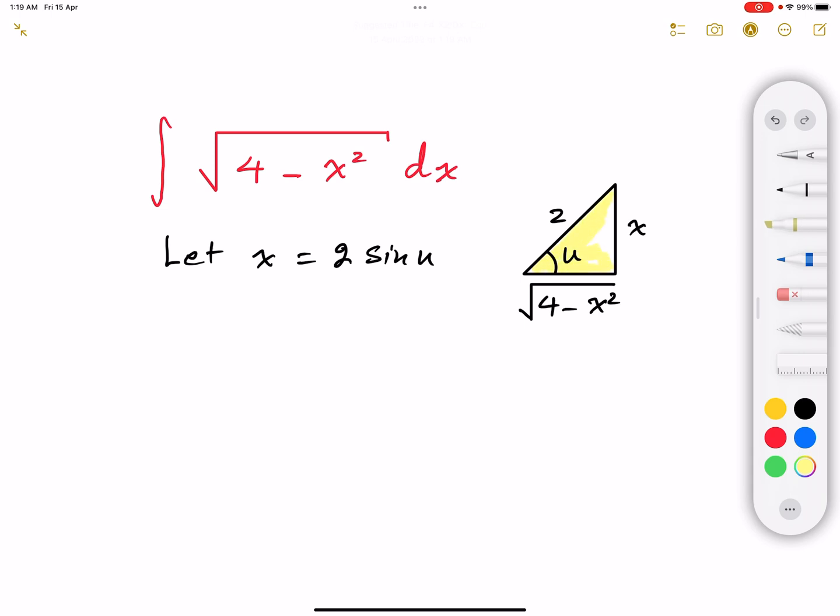And then what we're going to do, because we're going to get back to this triangle when we express our final answer. So let's differentiate both sides. That implies that dx is equal to twice cosine u du by differentiating both sides.